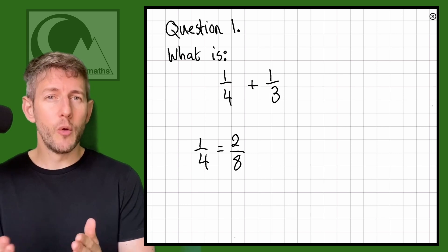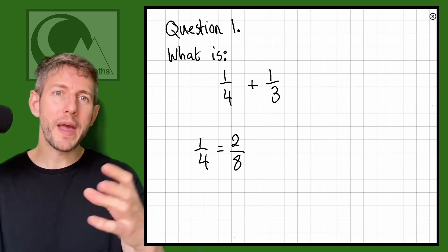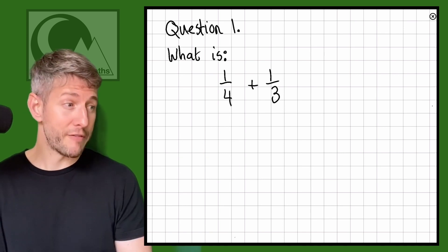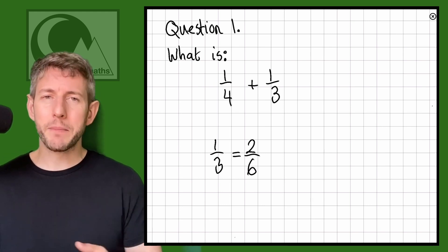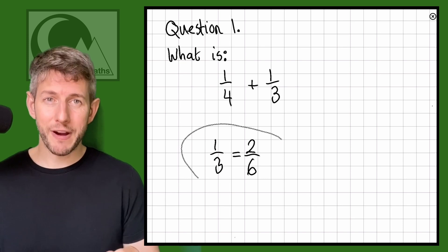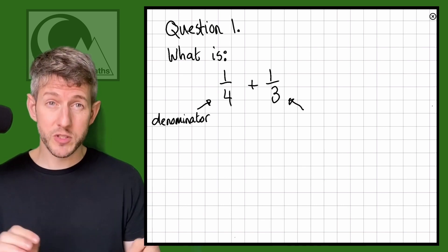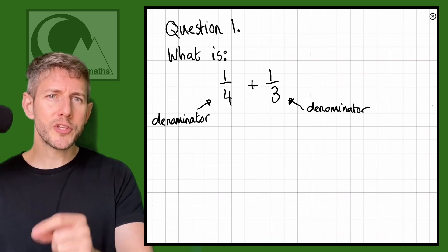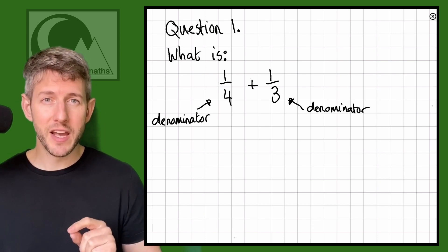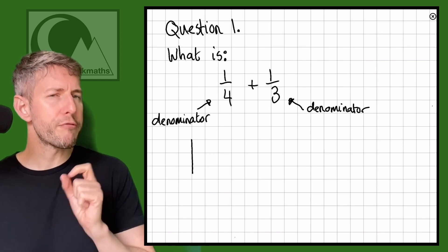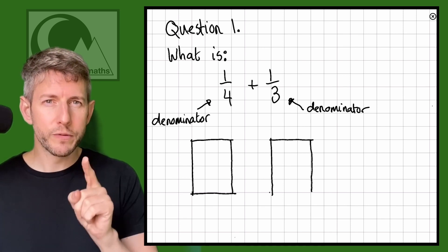For example, one quarter is two eighths, and one third is two sixths — we can use this information to help add fractions. With adding fractions when you've got two completely different denominators — that's what we call the bottom of the fraction — what I like to do is draw two rectangles where the width is one denominator and the length is the other. If we look at the board, I've drawn a three by four rectangle, and inside there are going to be 12 squares.